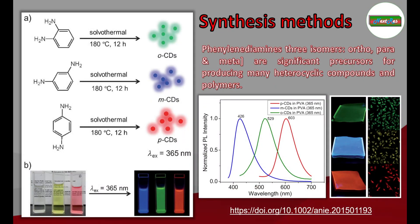This is a very interesting work published in a journal where the scientists have used different isomers of phenylenediamine, which have been used as a precursor for producing two different fluorescence carbon dots. Only in the case of ortho-phenylenediamine are they able to obtain a red fluorescence. This is the image of the fluorescence pattern obtained by exciting the quantum dots with a 365 nanometer light source.